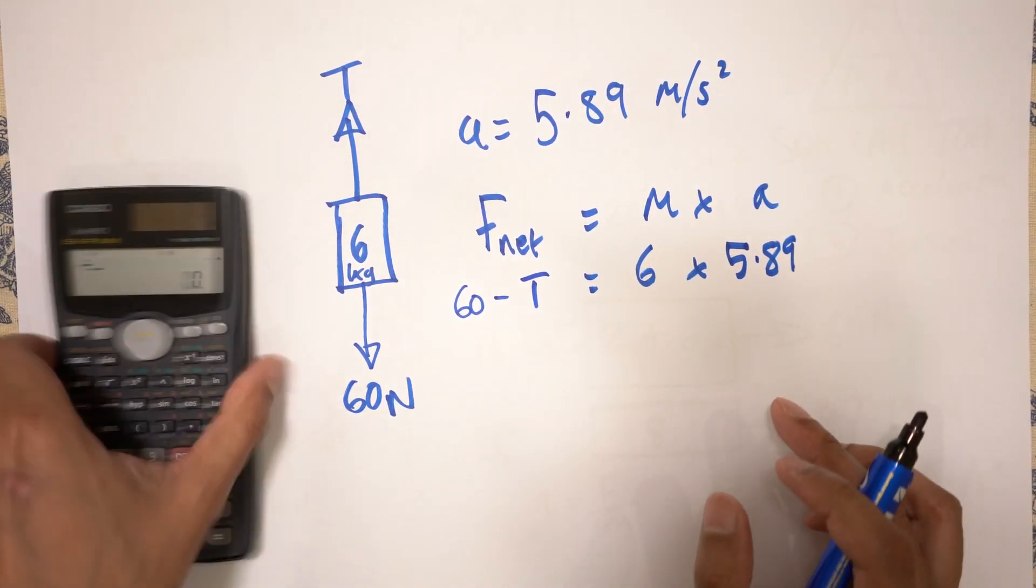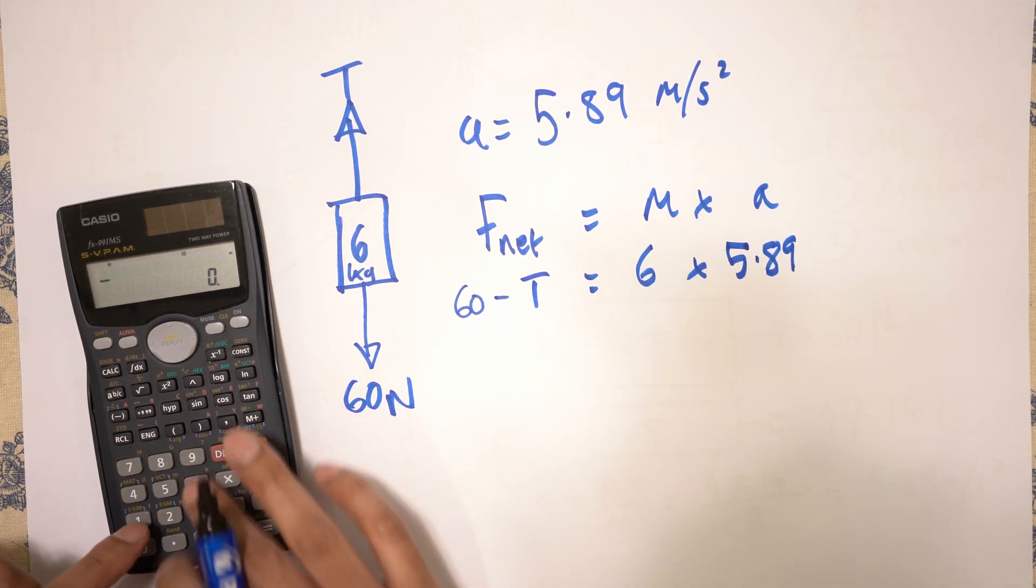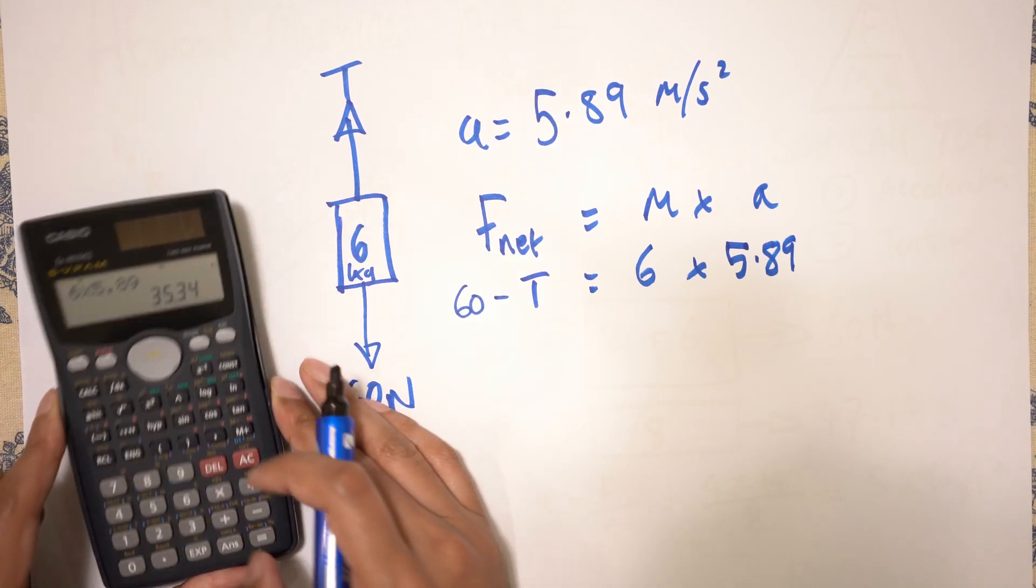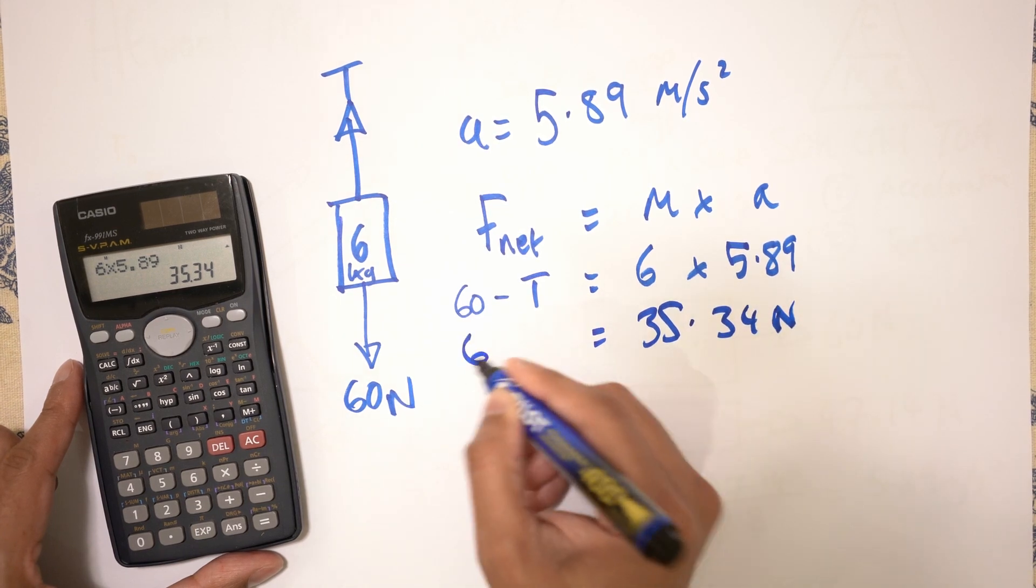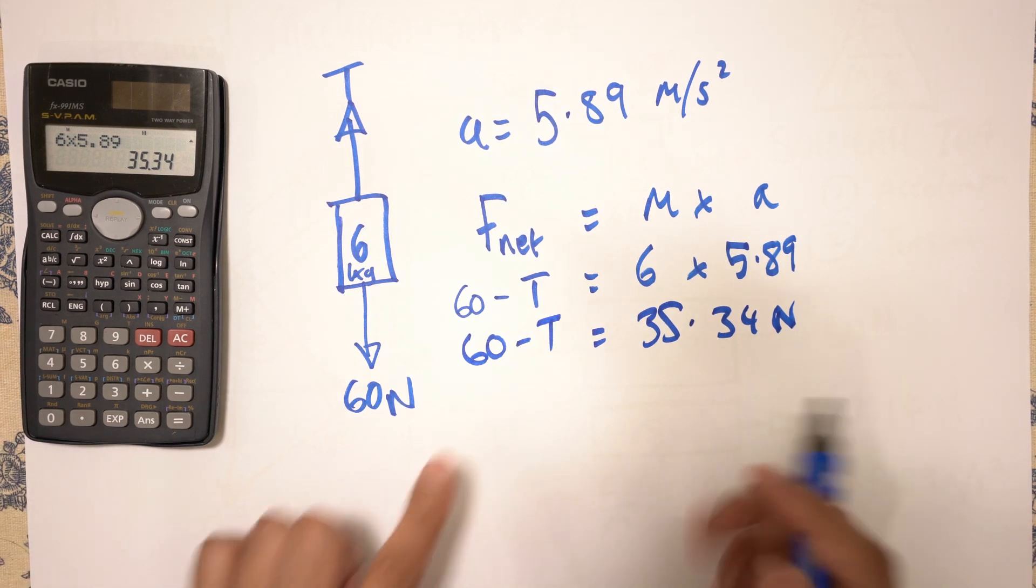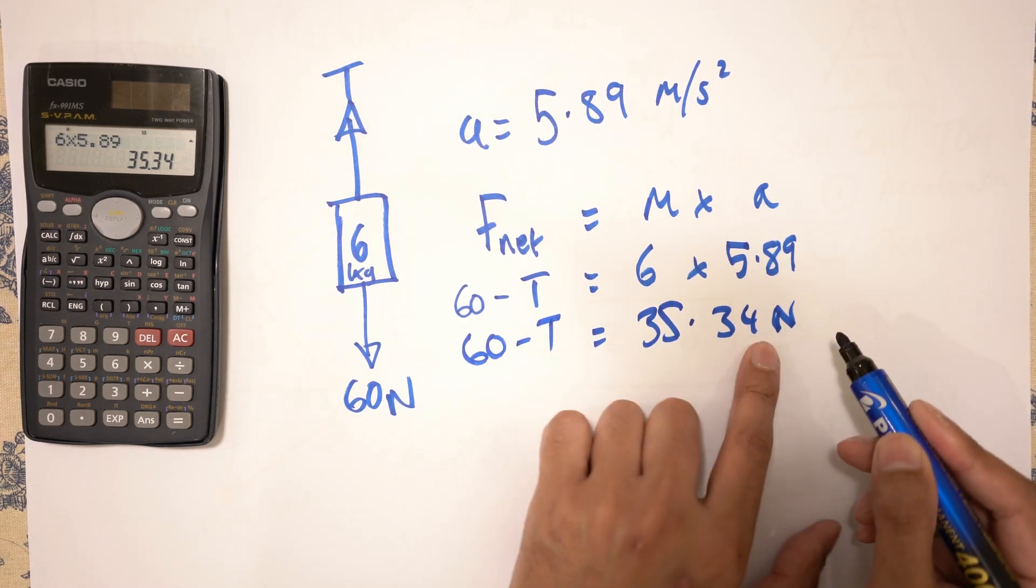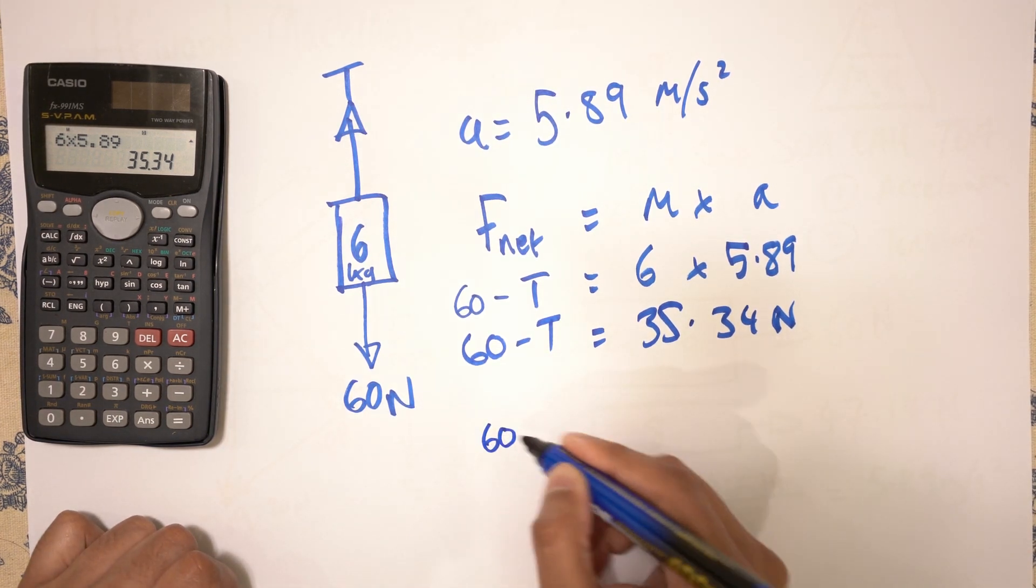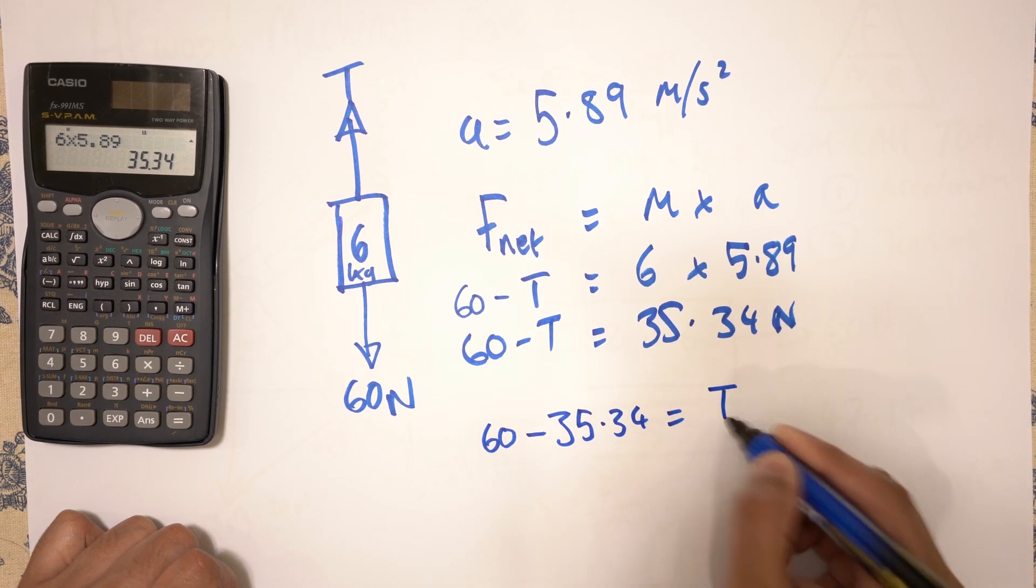So we've got this. So let's work all of this out. So 6 times 5.89 is 35.34 Newtons. So 60 minus T is 35.34. Now what you do, that minus goes over to the other side, becomes a plus. That goes over to the other side, becomes a minus.